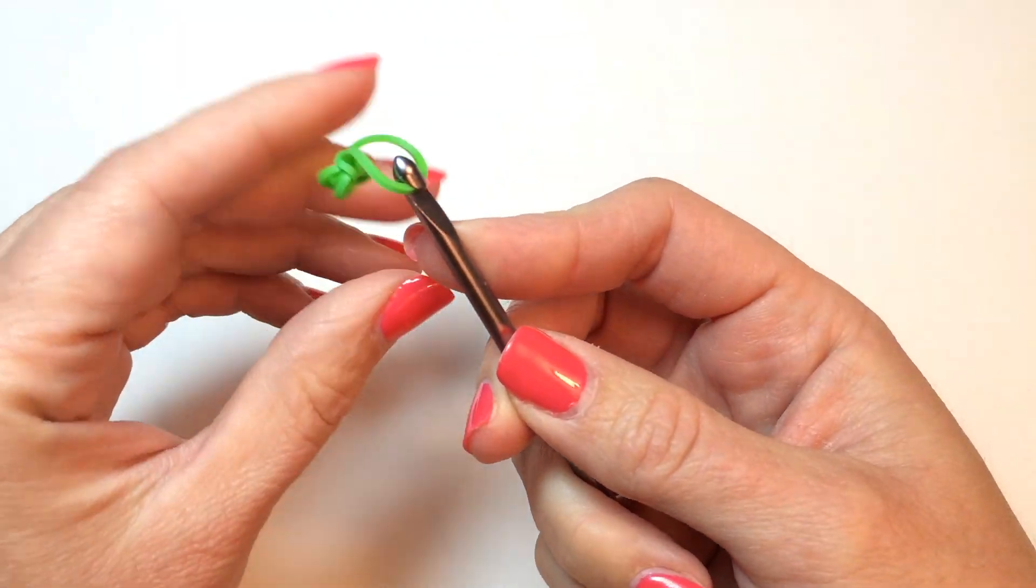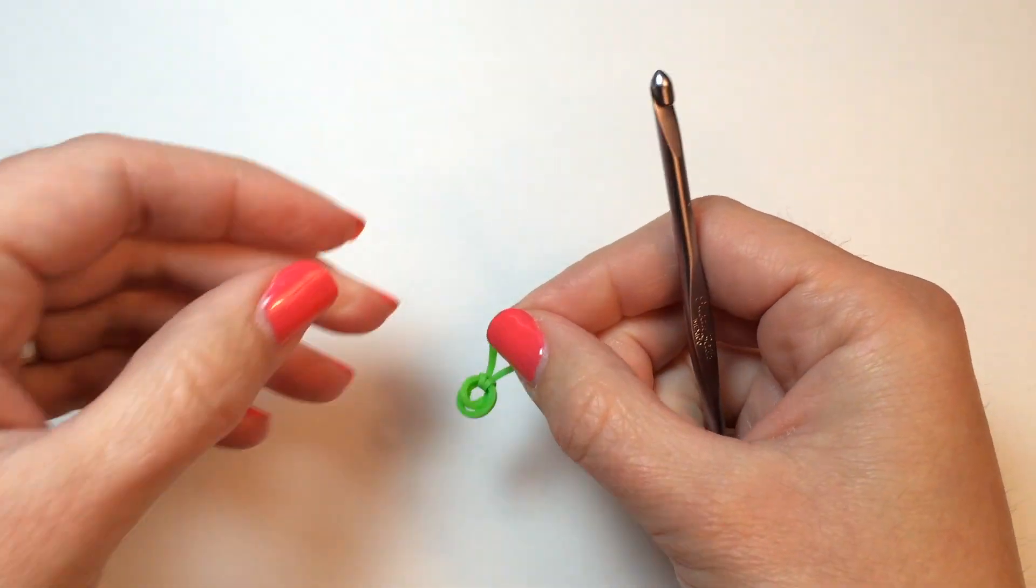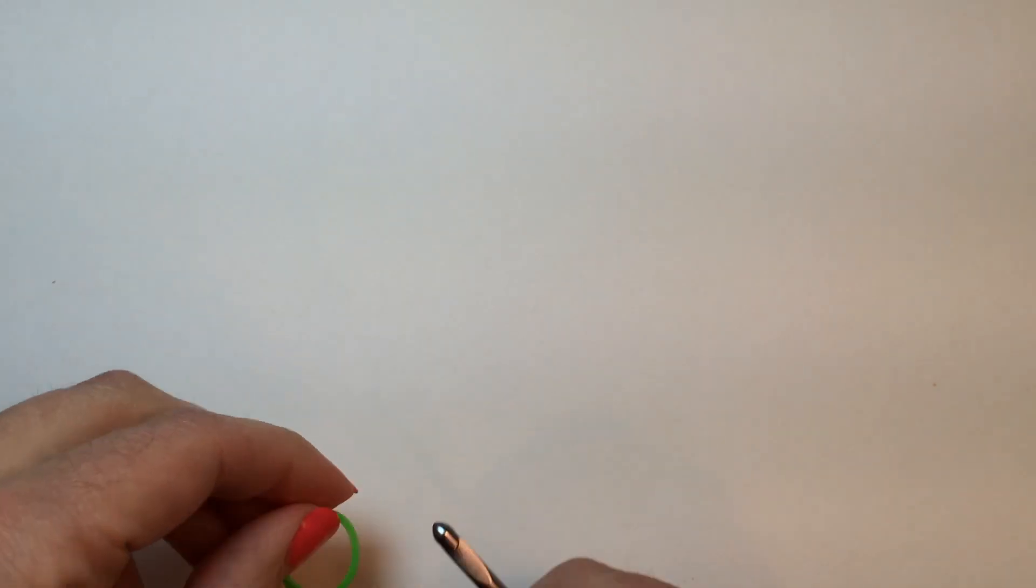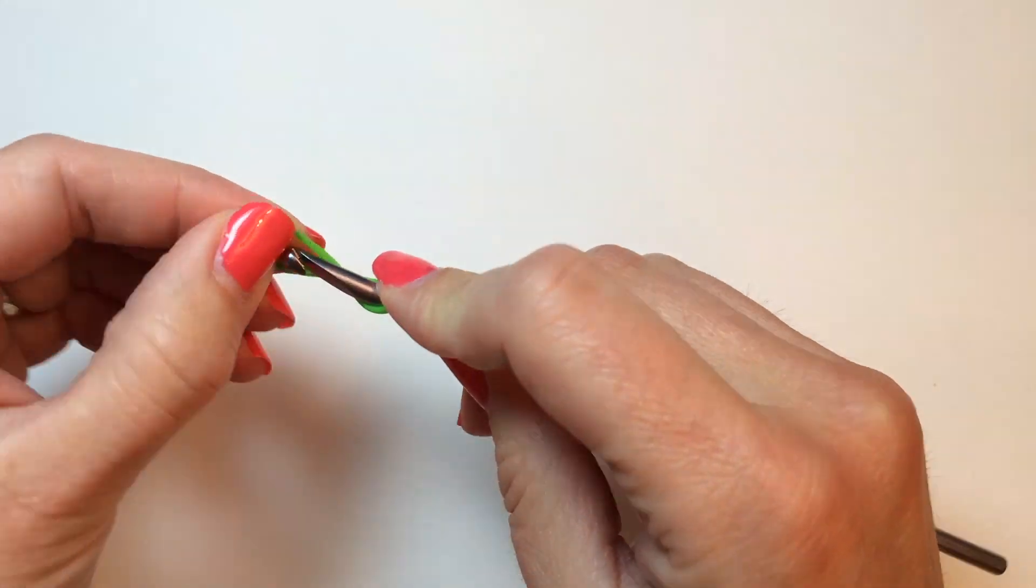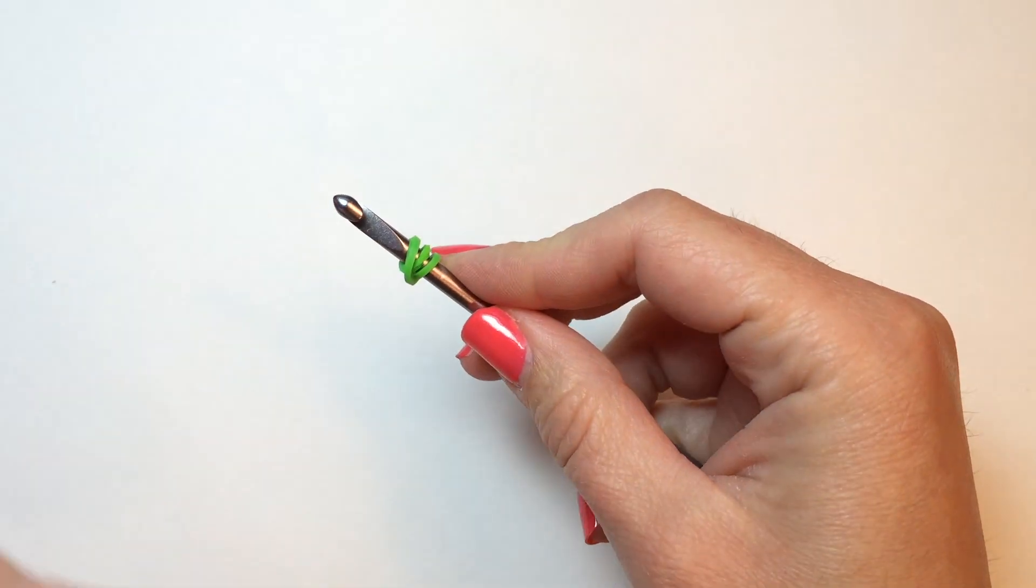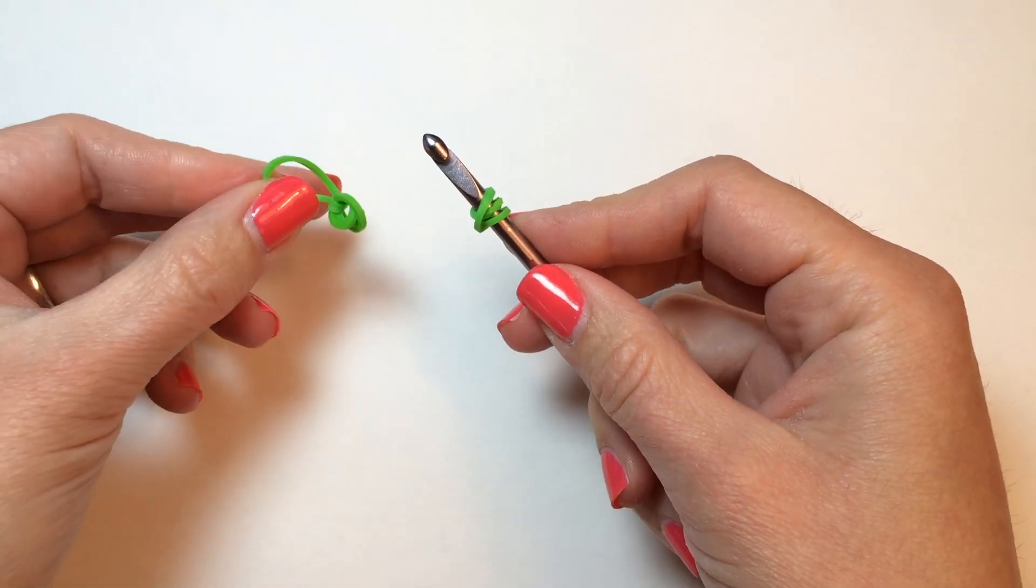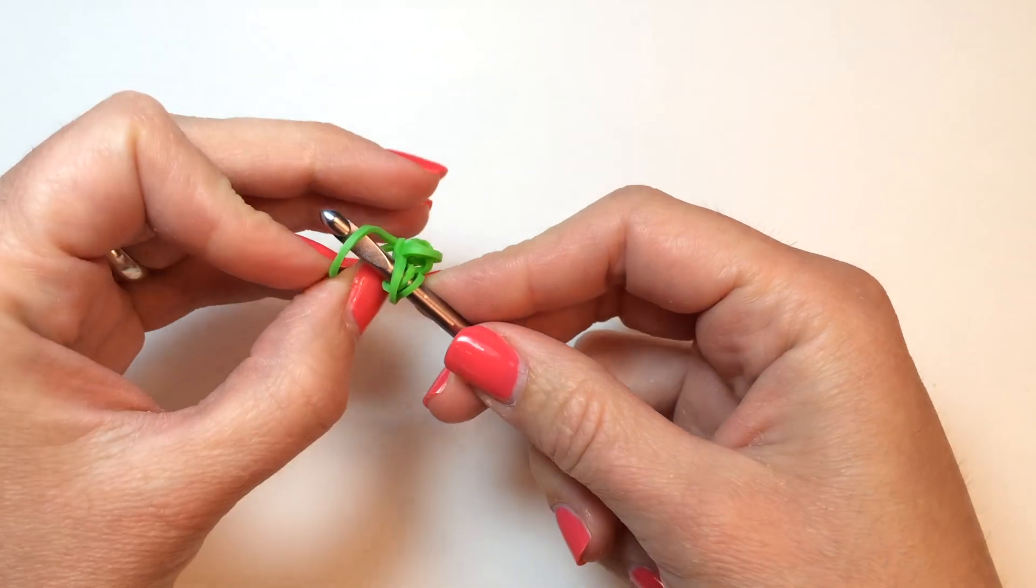So, that's one of your leaves. And now, we want to set this aside, to set up for the second leaf, wrapping around the green band three times. Then, bring back the one with the first leaf attached.